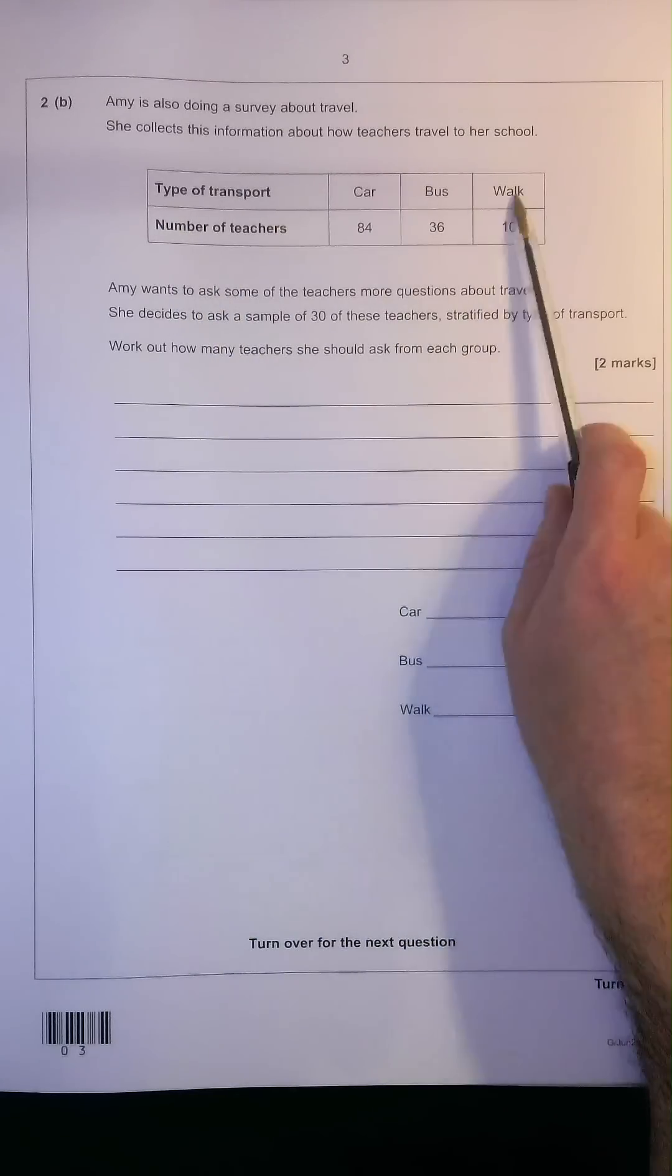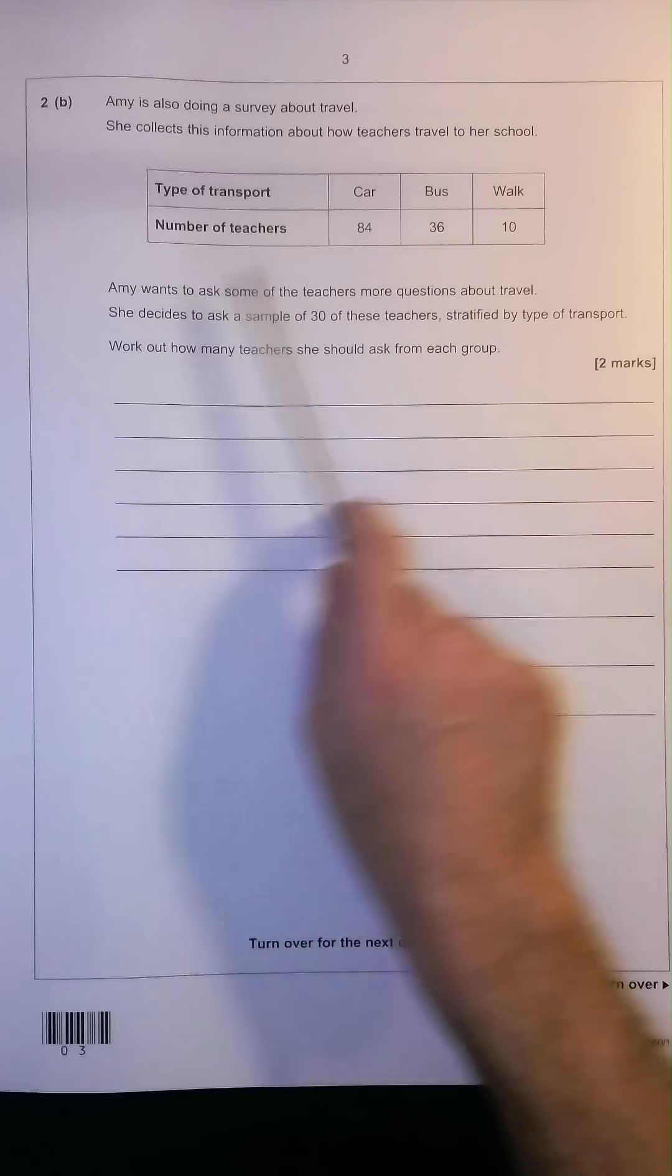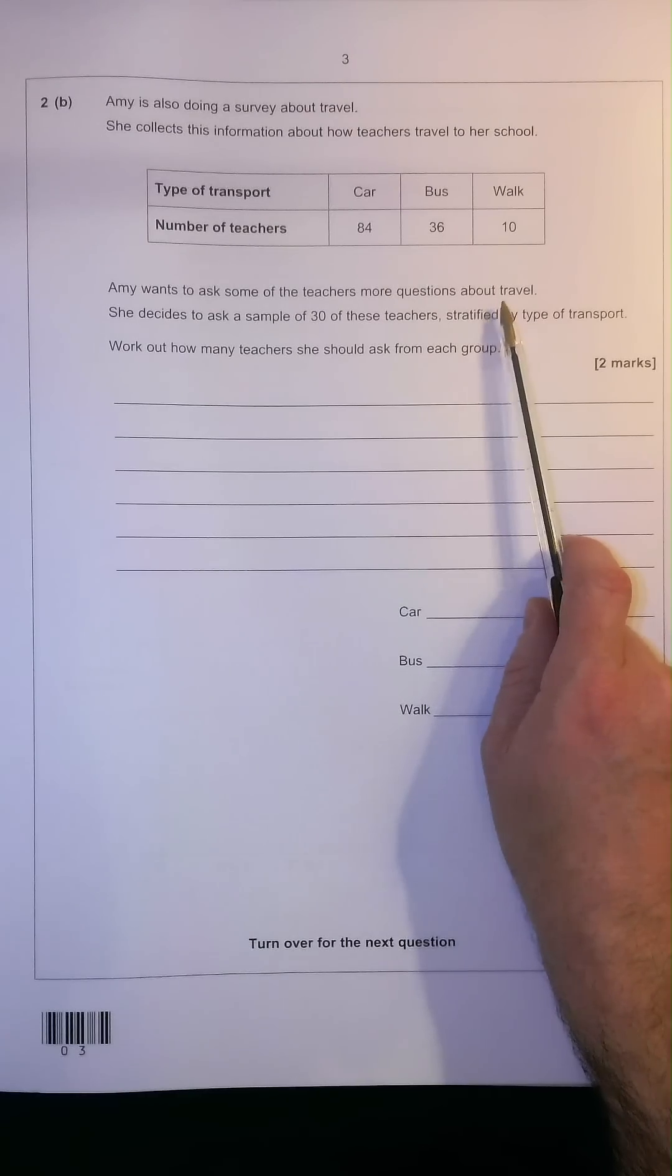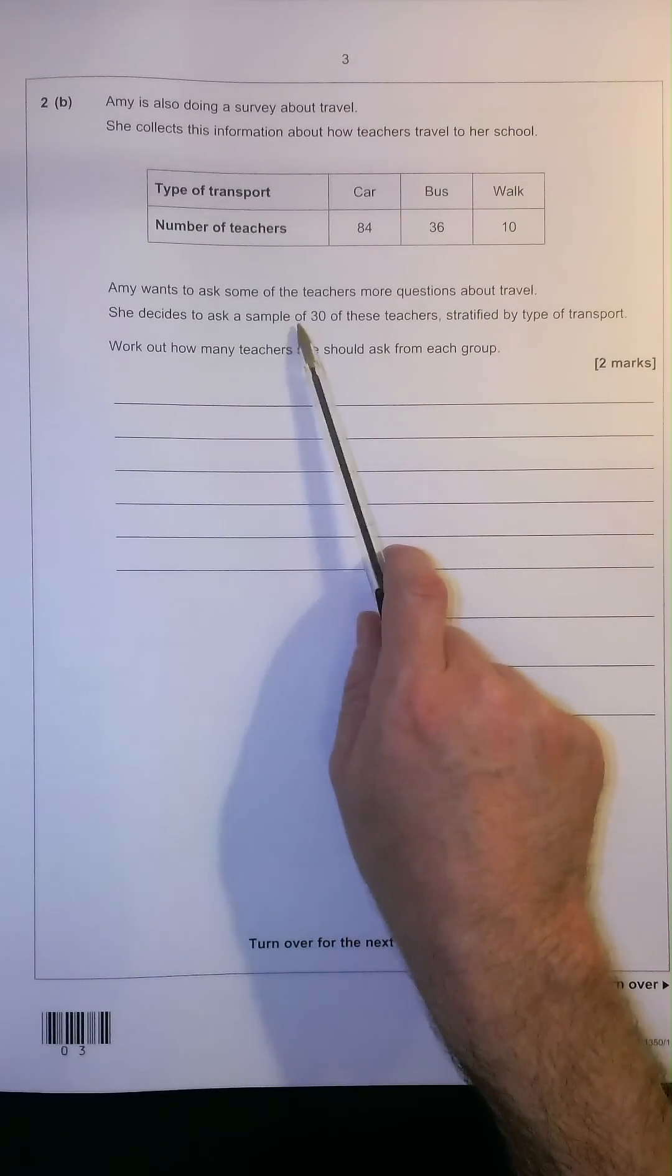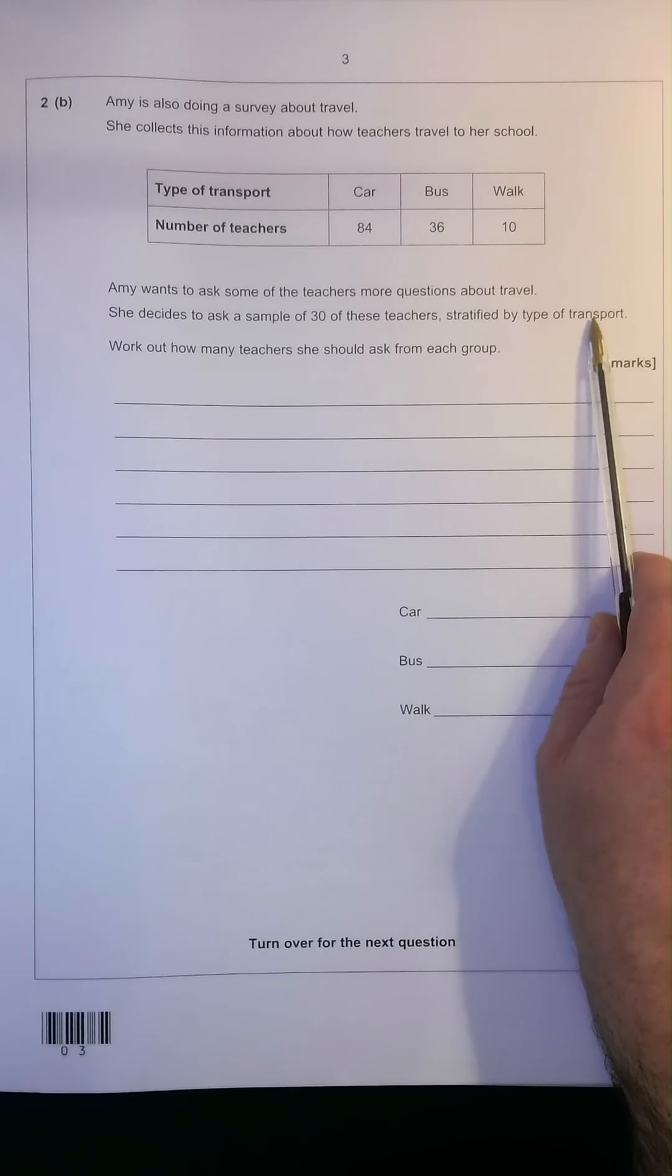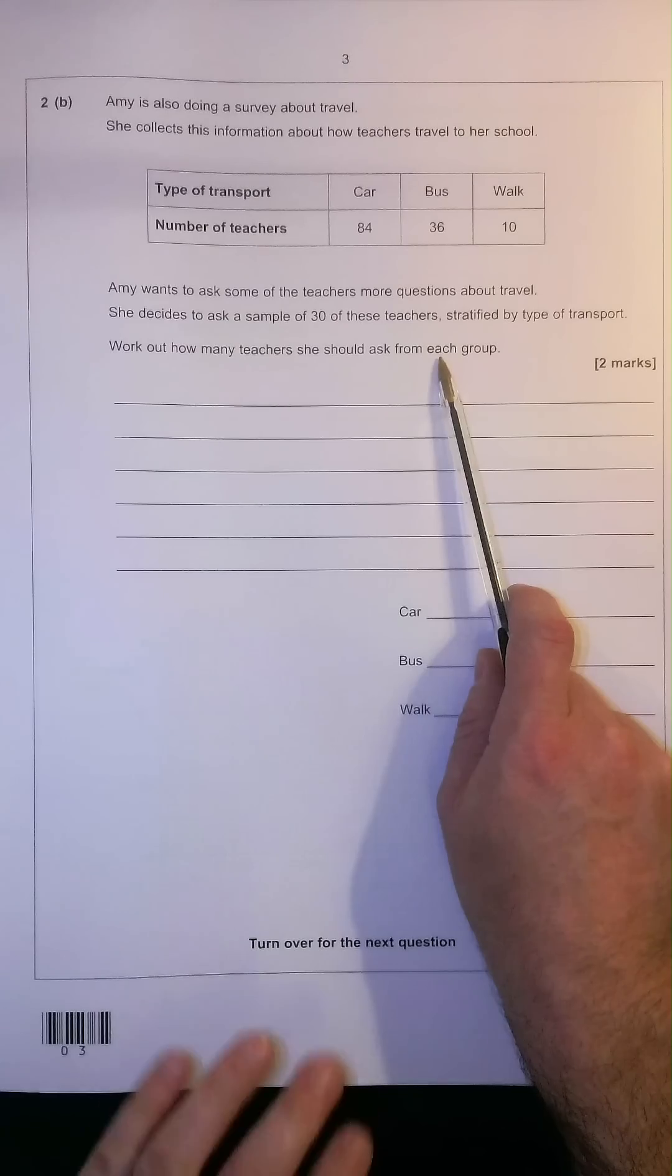We've got three types of transport together with the number of teachers who take each type of transport. Amy wants to ask some of the teachers more questions about travel. She decides to ask a sample of 30 of these teachers stratified by type of transport. Work out how many teachers she should ask from each group.